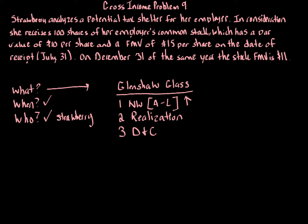There must be a realization event. And finally, there must be complete dominion and control. We look at the beginning of the tax year versus the end of the tax year. At the beginning, strawberry does not have the shares. At the end, strawberry receives 100 shares which do have some value, so an asset has gone up. We have net worth.